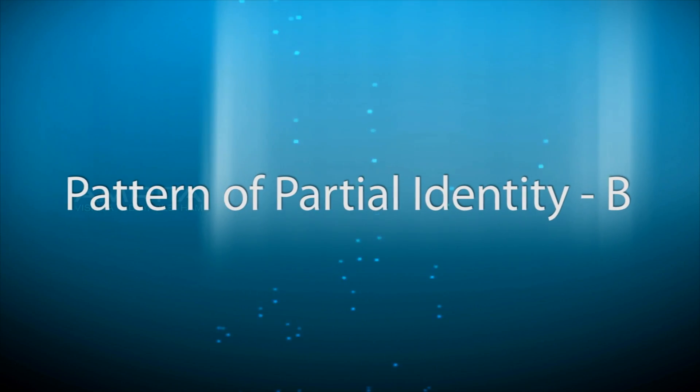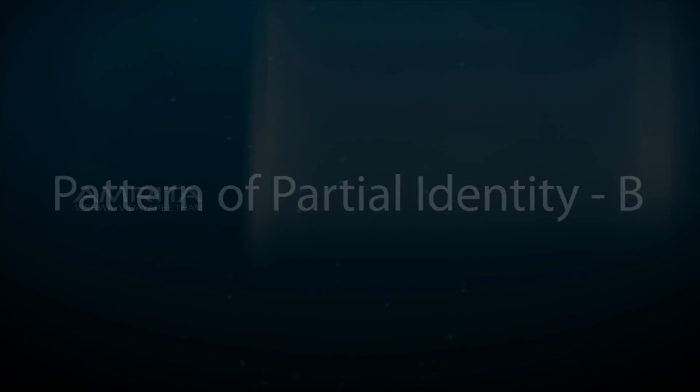Pattern of Partial Identity (B). In this pattern of partial identity, the antibodies in the anti-serum react more with one of the antigens than the other. The spur is thought to result from the determinants present in one antigen but lacking in the other antigen.